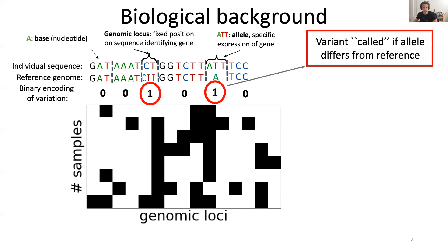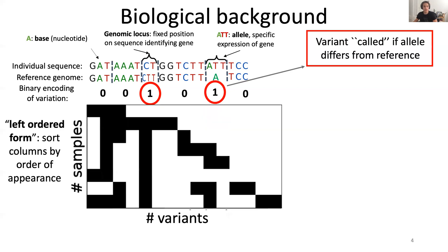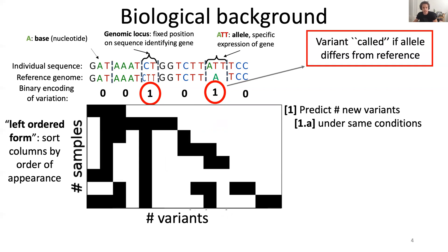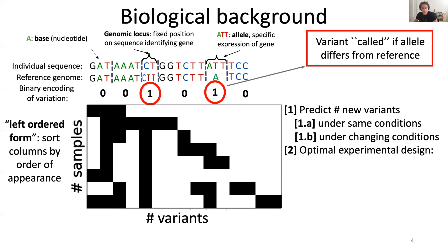For this talk, rather than considering this exact matrix, we're going to consider a permuted version of it, the so-called left-ordered form, in which columns are sorted by order of appearance. In this way, we destroy all the spatial information about the genome, but we see immediately that the columns intuitively quantify a rate of growth in the number of observed variants. Our goals will be to predict the number of variants both in the standard setting where experimental conditions are constant, as well as the more challenging and realistic one where conditions are allowed to change between the pilot and the follow-up, and to use this predictor to inform optimal experimental design.